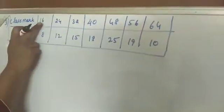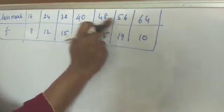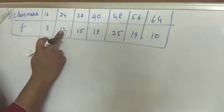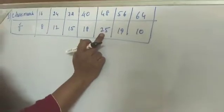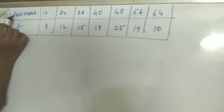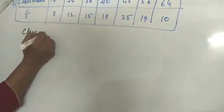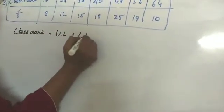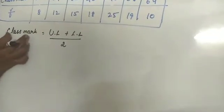Class mark 16, 24, 32, 40, 48, 56, 64. Frequencies 8, 12, 15, 18, 25, 19, 10. And you should know what is class mark: upper limit plus lower limit divided by 2. That is the class mark.